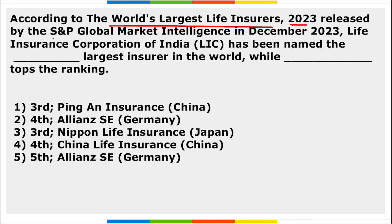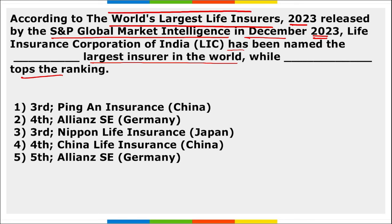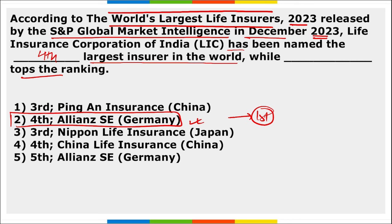Next: according to the World's Largest Insurer 2023 report released by SNP Global Market Intelligence in December 2023, LIC has been named the fourth largest insurer in the world, while Allianz SE of Germany has topped the ranking as the first-ranked insurer in the world.